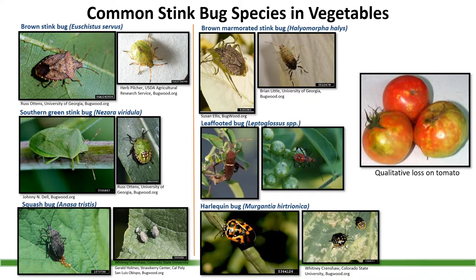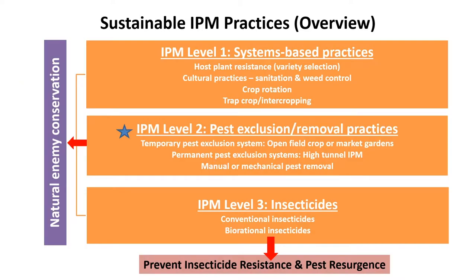There are also many stink bug species and leaf-footed bugs that are very common and they will cause qualitative loss on fruits — these are also targets of the pest exclusion system. Essentially there are three levels of IPM or integrated pest management: level 1 is systems-based practices, level 2 includes pest exclusion practices such as the temporary pest exclusion system we're looking at today, and level 3 is the use of insecticides as needed.